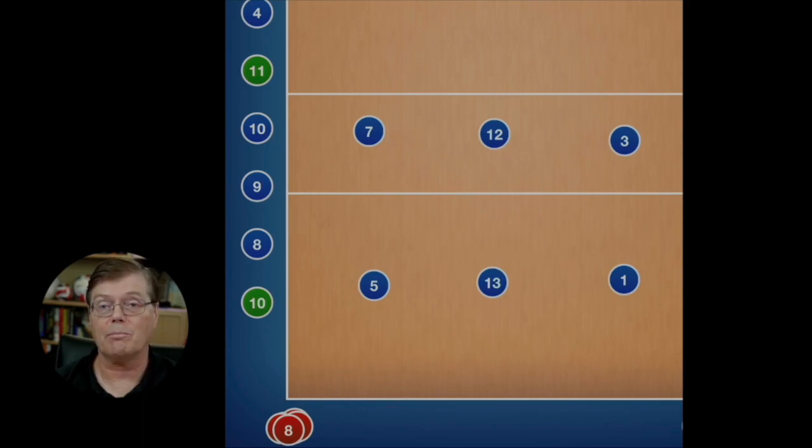The exchange is always for the same player. In this case, we're going to have our libero come in for number 13, who is our middle in the back row and maybe needs a little break, or maybe the libero is a little better passer. So we're going to bring them in and bring them off. That completes that exchange.